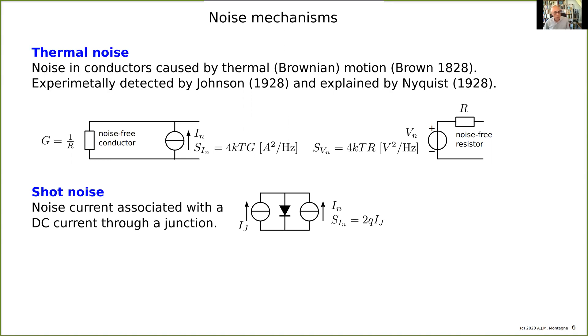So noise associated with, and here I depicted a diode, so a DC current through the diode IG, the junction current. Associated with this current, there is a noise spectral density of 2QIG in amps squared per hertz.